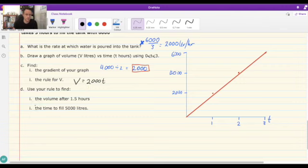And we use the rule to find the volume after 1.5 hours. So v equals 2,000, we're going to substitute 1.5 in for t. 1.5 times 2,000 is 3,000. So that's that one there.